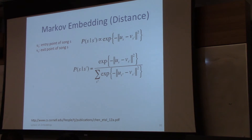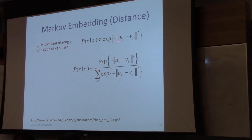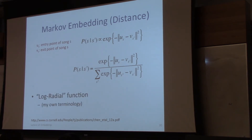What does that mean? If I'm currently at song S prime, the probability distribution that the next song will be song S is proportional to a distance function — we look at the exit location of song S prime and the entry location of song S and look at their distance. The full probability distribution sums over every possible song.